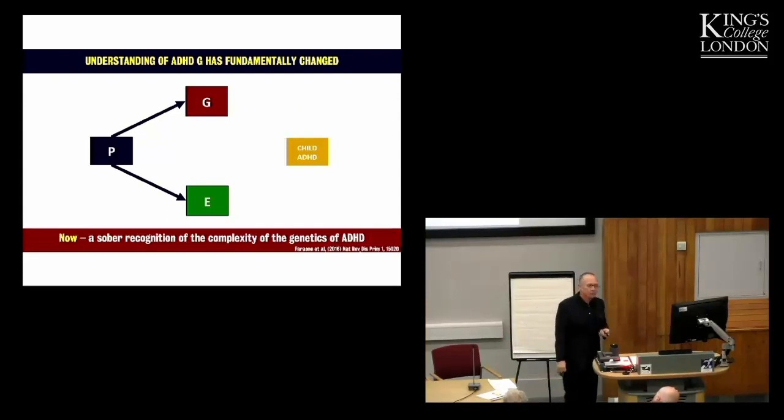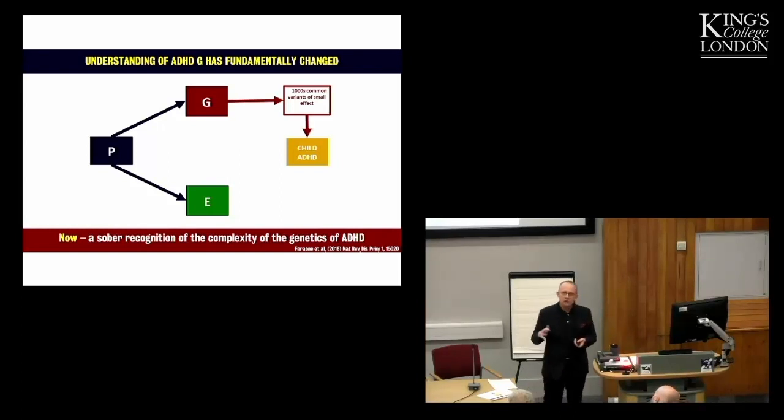Now, there's a sober recognition that it's a very complicated picture. And, in fact, because of repeated failed replications of those initial candidate findings and the vanishingly small effect sizes for each individual gene, candidate gene, we estimate that thousands of genes are probably implicated in ADHD. That's a big change over the last 10 years. The really profoundly polygenic nature of ADHD.